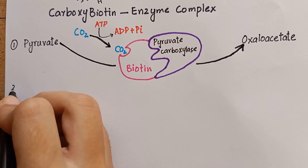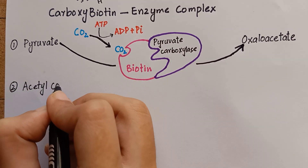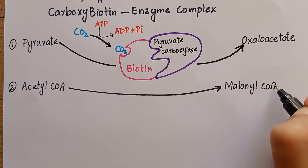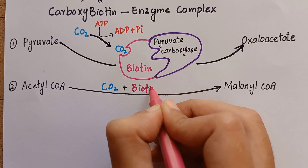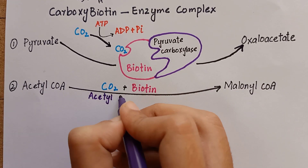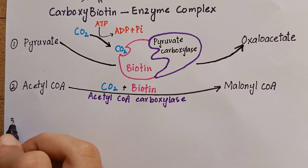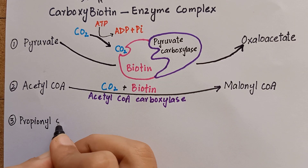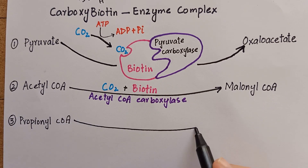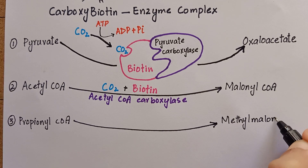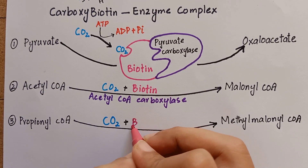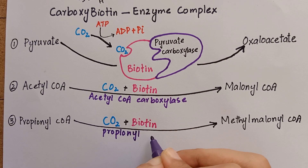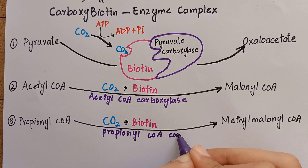Another reaction that undergoes carboxylation by the same mechanism is the conversion of acetyl-CoA to malonyl-CoA during fatty acid synthesis. There is also the conversion of propionyl-CoA to methylmalonyl-CoA during metabolism of certain amino acids, which also undergoes a similar carboxylation reaction with biotin as coenzyme.